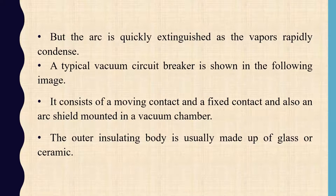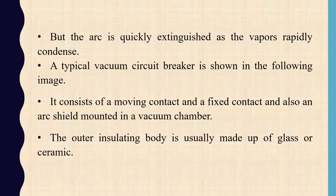The vacuum circuit breaker consists of a moving contact and a fixed contact, and also an arc shield, all mounted inside a vacuum chamber. Inside the cylindrical vacuum chamber, we have the moving contact and fixed contact. The outer insulating body is usually made of glass or ceramic, and the chamber is fully sealed.